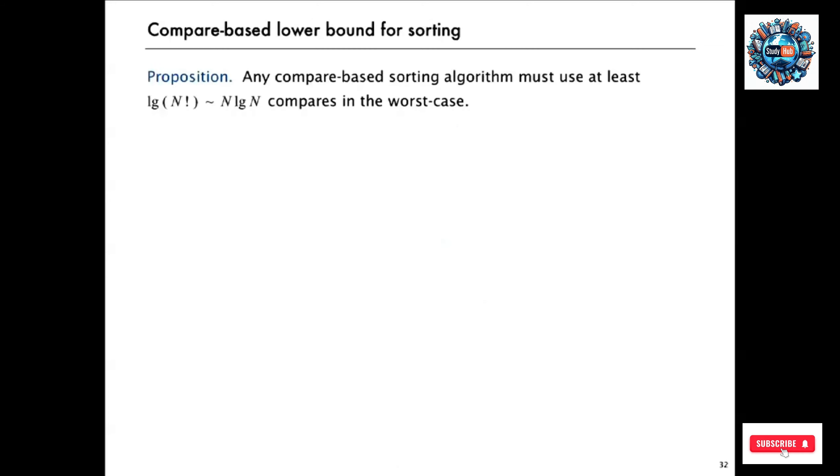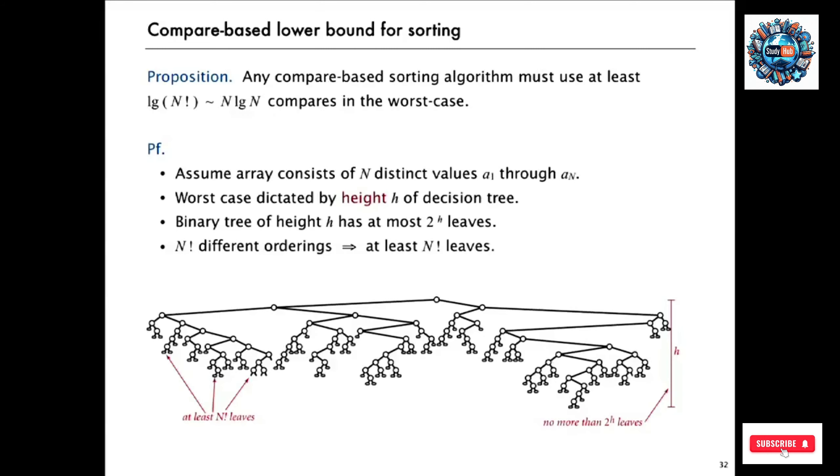So the lower bound is a proposition that uses a decision tree like that to prove that any compare-based sorting algorithm has to use at least log base 2 of N factorial compares in the worst case. And by Sterling's approximation, we know that log base 2 of N factorial is proportional to N log base 2 of N.